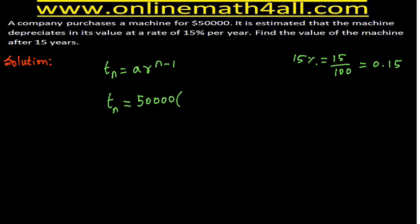To find the value of R, we just have to subtract 0.15 from 1. Students may have a question here — this is not just for this particular problem. For any problem on depreciation where we are solving using geometric sequence, to find the value of R, we just have to subtract the decimal form of the given rate from 1. This is like a formula to always remember when doing depreciation problems using geometric sequence. When you subtract 0.15 from 1, you get 0.85 as the value for R.